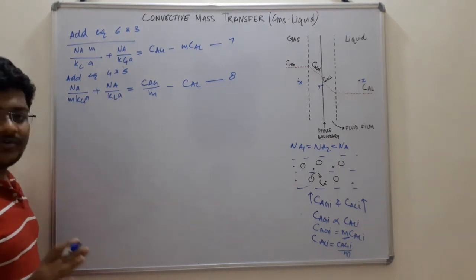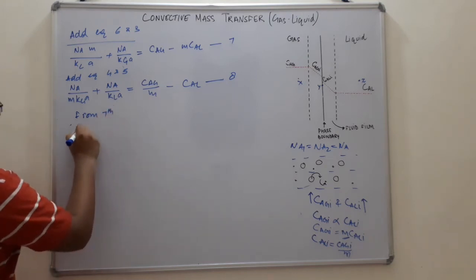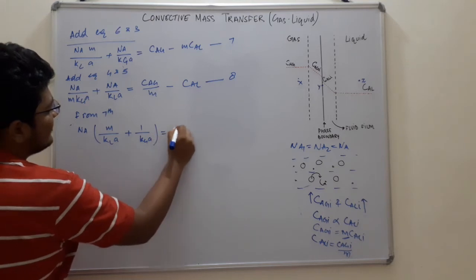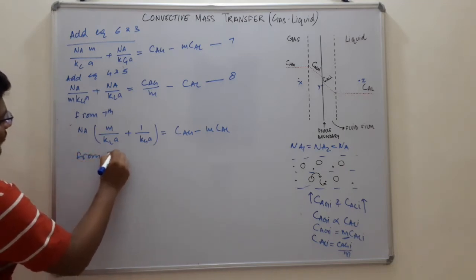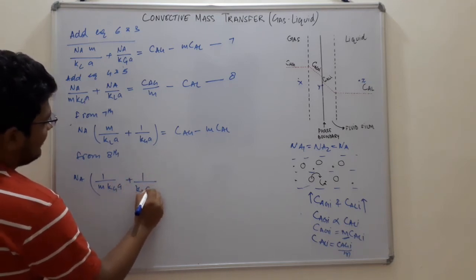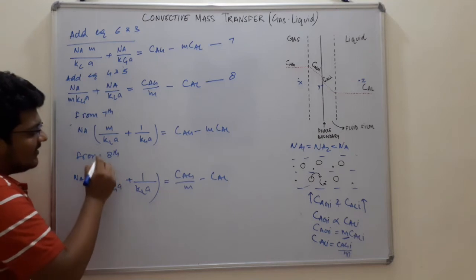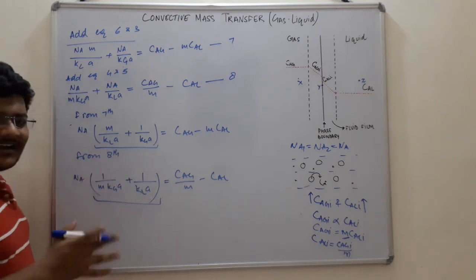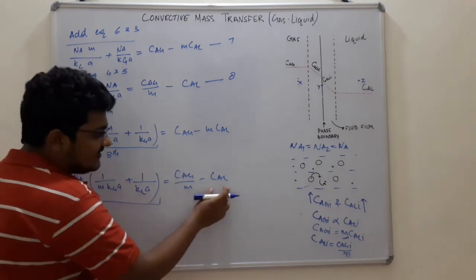Taking N_A common from equation 7: N_A · (m/k_L·a + 1/k_g·a) = C_Ag − m·C_AL. Taking N_A common from equation 8: N_A · (1/(m·k_g·a) + 1/k_L·a) = C_Ag/m − C_AL. The bracketed terms in both equations are entirely composed of constants, so we can replace each bracket with a single overall constant.